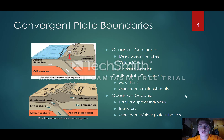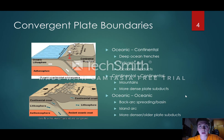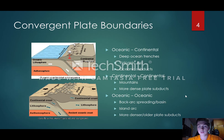The more dense plate subducts beneath the other. When two oceanic crusts meet it can cause an island arc, which has volcanoes on it. They can also have back-arc spreading, which is when the older, more dense plate is so dense that it eventually collapses underneath itself and creates a back-arc basin.